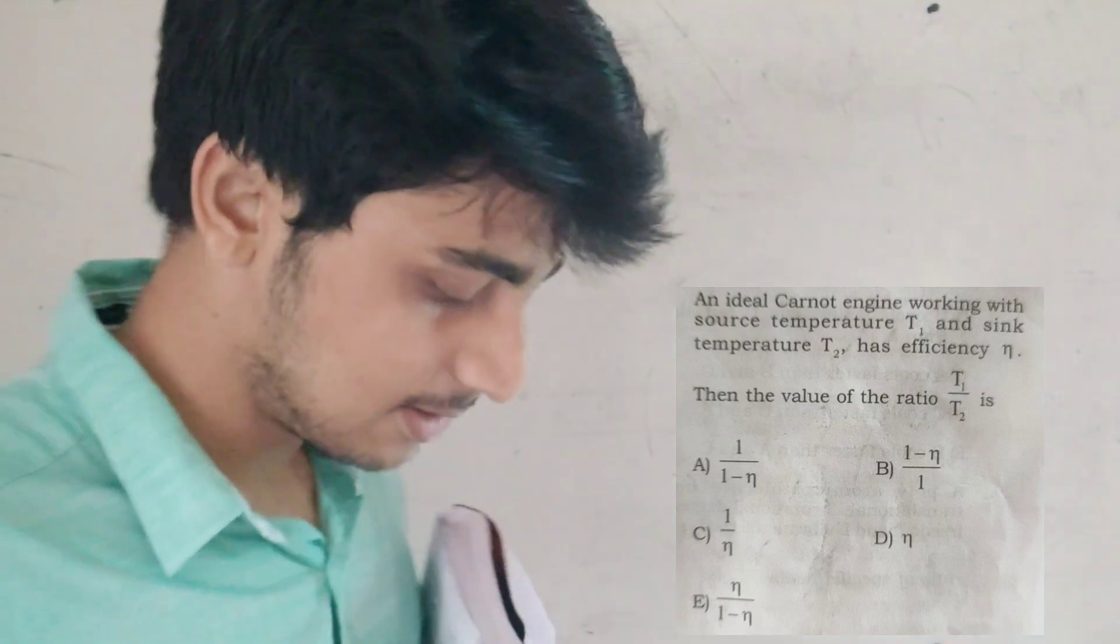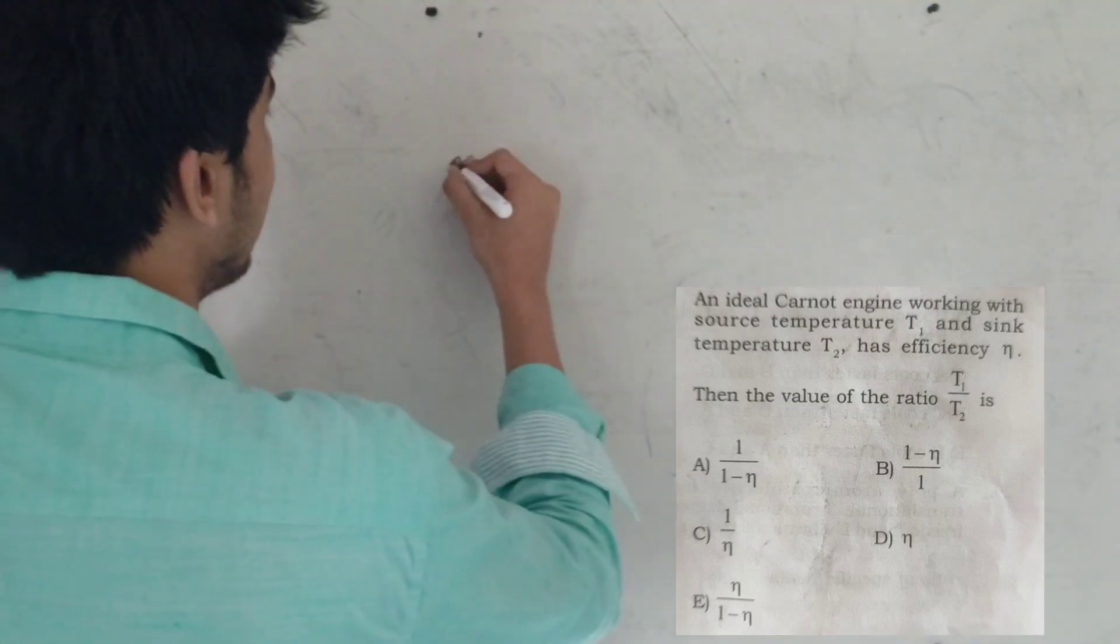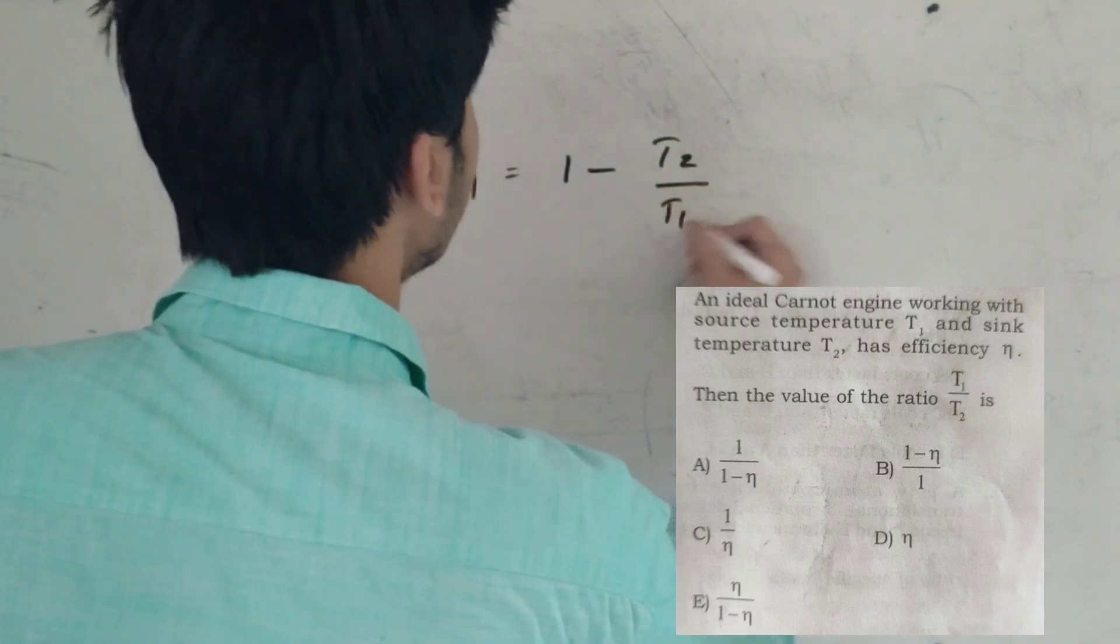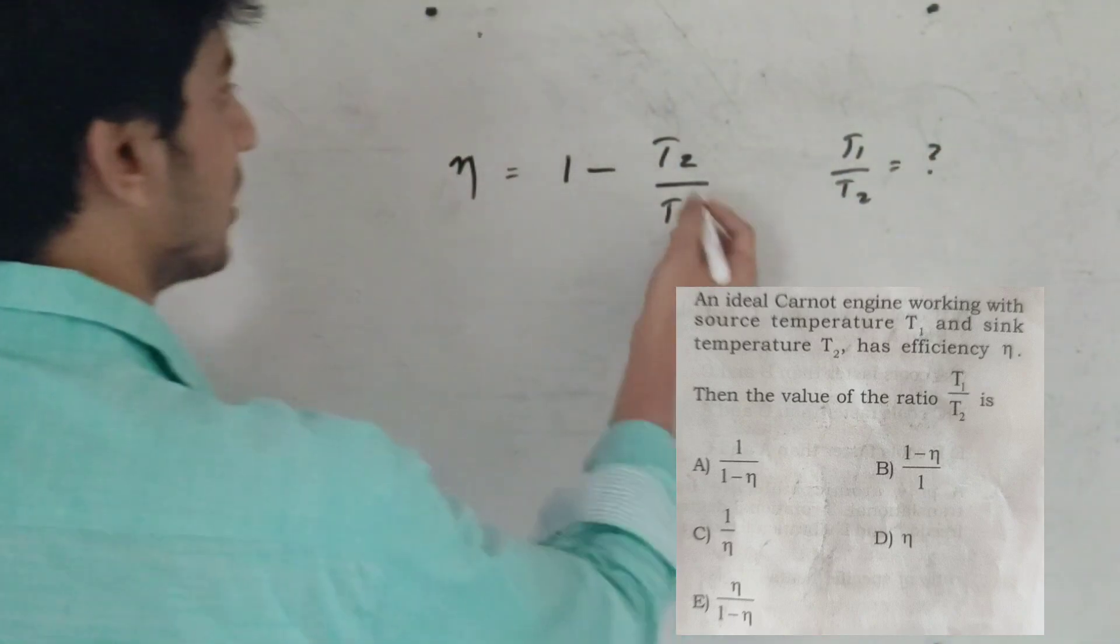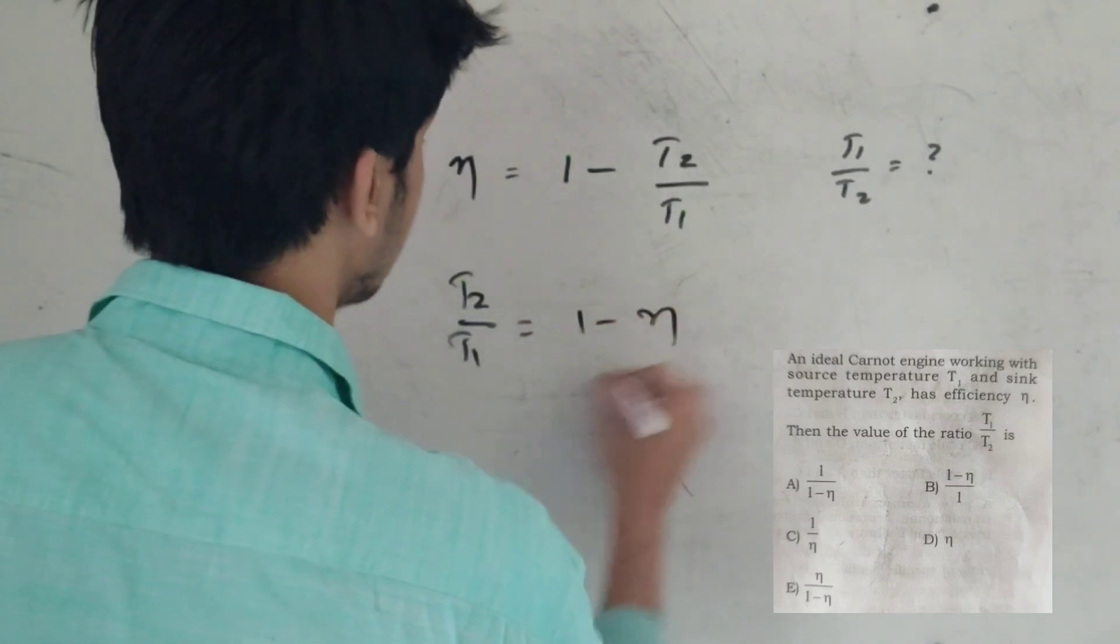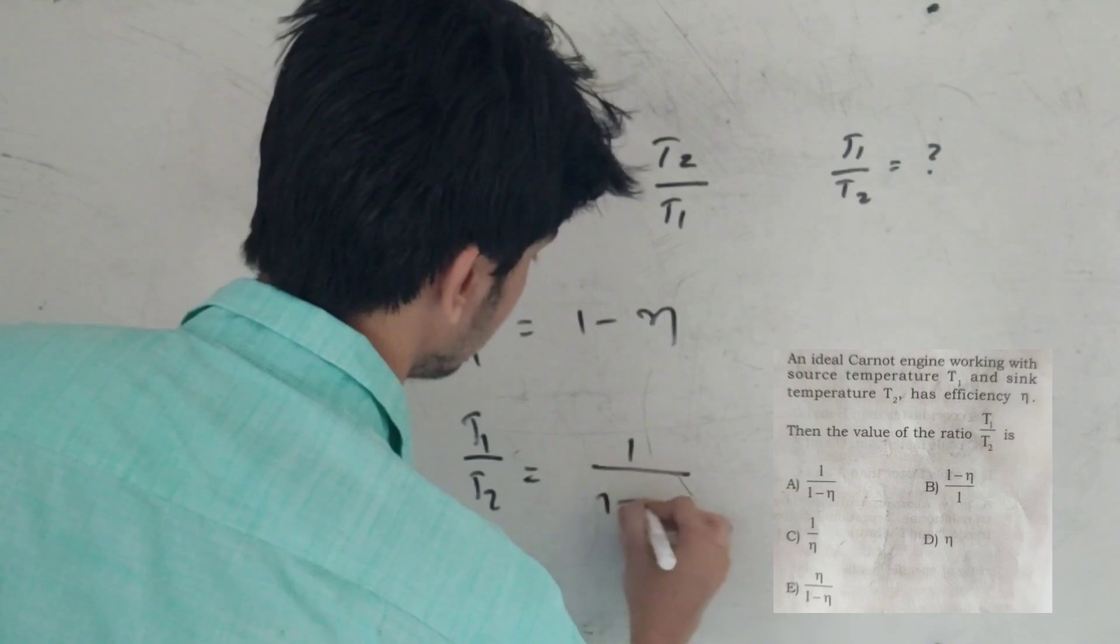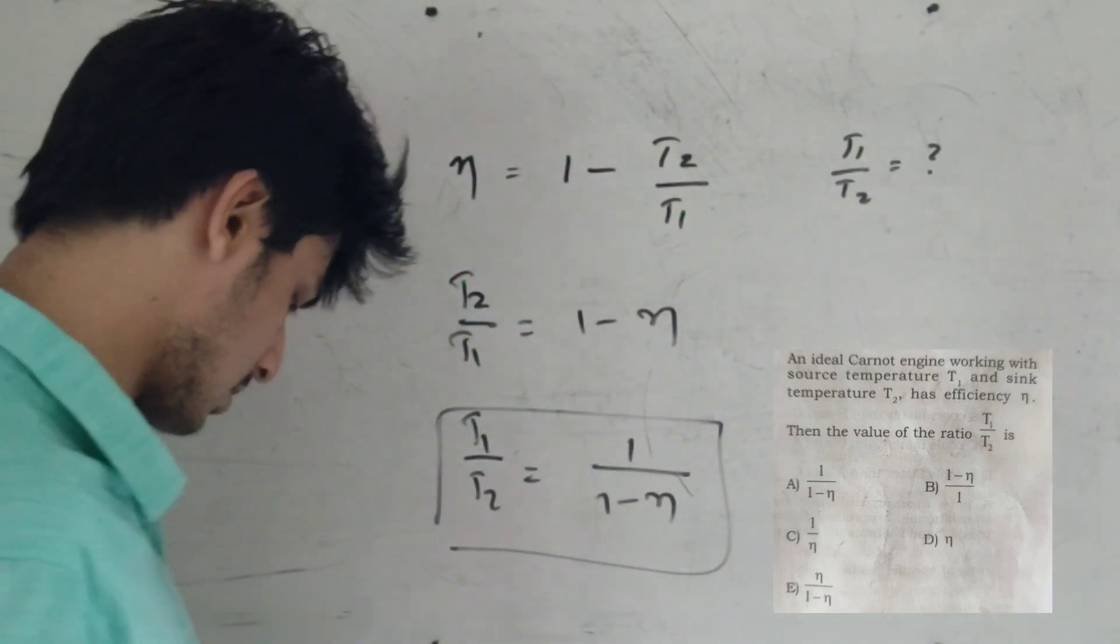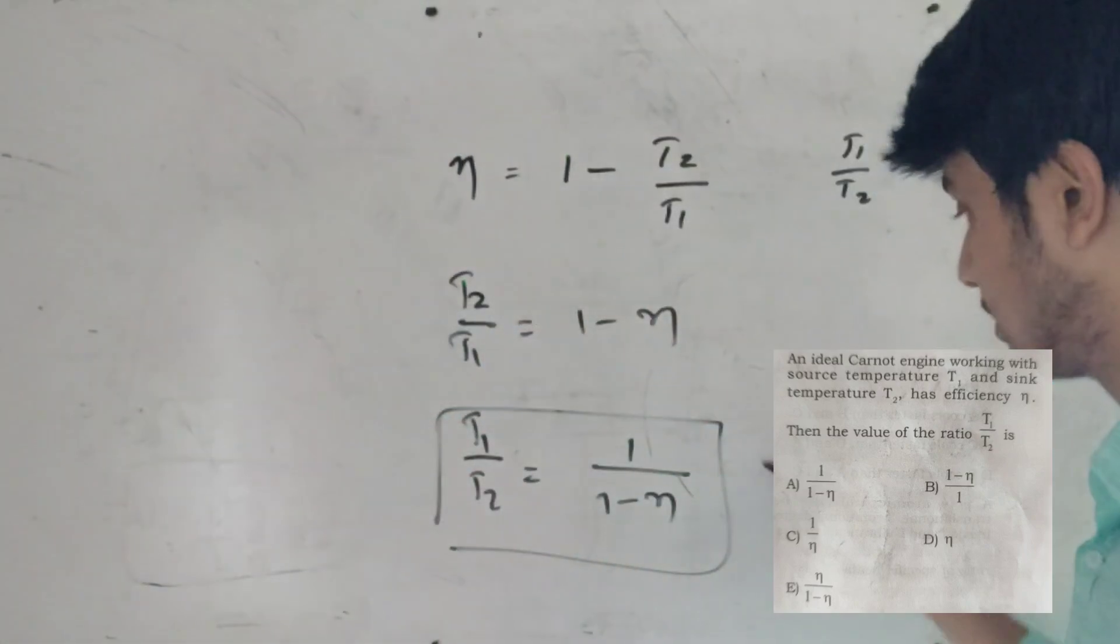η equals 1 minus T2 by T1. How do we show it? Using simple algebra, T2 by T1 equals 1 minus η, so T1 by T2 equals 1 over 1 minus η. What is the option? A option. Simple.